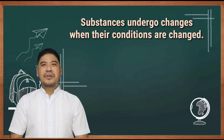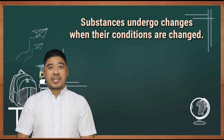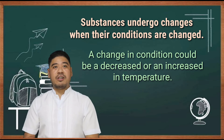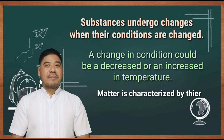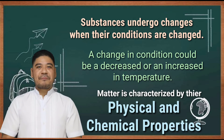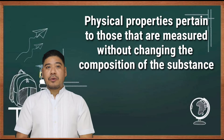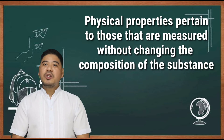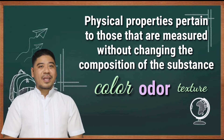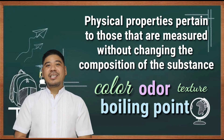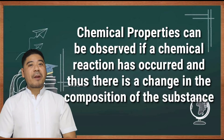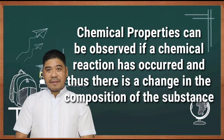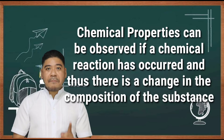Substances undergo changes when their conditions are changed — a change in condition could be a decrease or an increase in temperature. Matter is characterized by physical and chemical properties. Physical properties pertain to those that are measured without changing the composition of the substance, and include color, odor, texture, boiling point, density, etc. Chemical properties can be observed if a chemical reaction has occurred and there is a change in the composition of the substance.